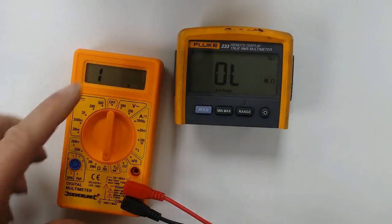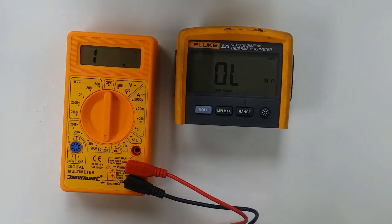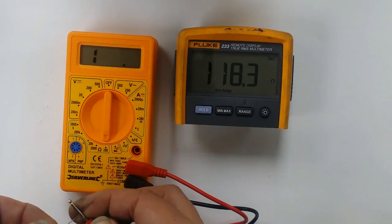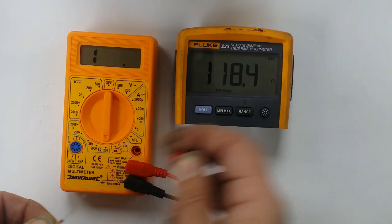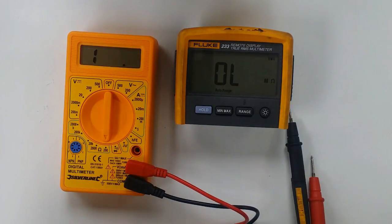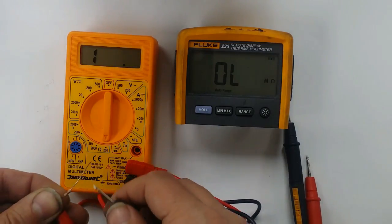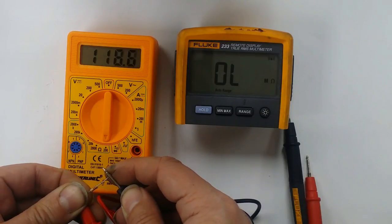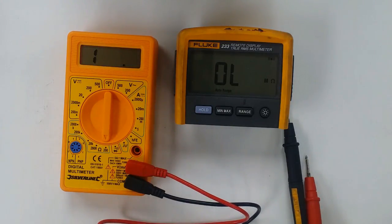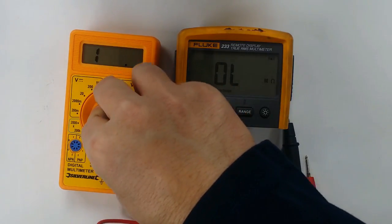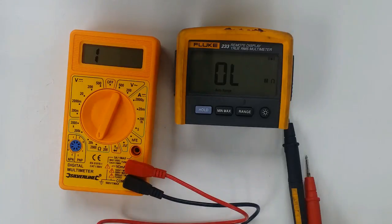Right, let's start on the 200 ohm range. Got my Fluke 233 here. Which this one is reading 118.4. So we get 118.3. Top marks for that range.